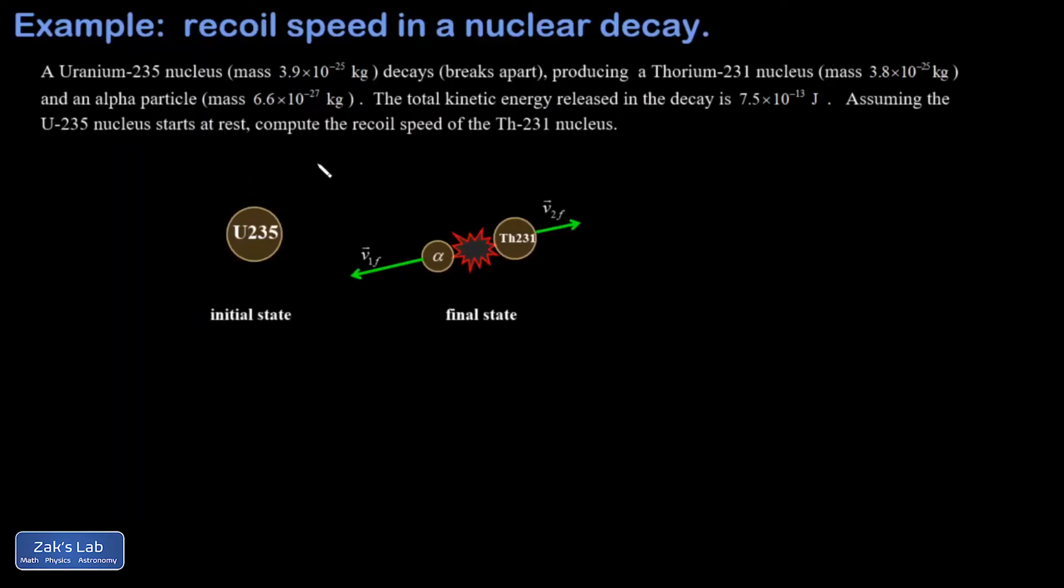We get a little bit of nuclear physics in this problem. I have a uranium nucleus spontaneously decaying through the alpha decay process, shooting out an alpha particle. We're told that the mass of that is 6.6 times 10 to the negative 27 kilograms. And it leaves over a thorium-231 nucleus with mass 3.8 times 10 to the negative 25 kilograms. We know the energy of the decay, E is 7.5 times 10 to the negative 13 joules.